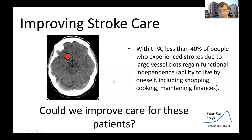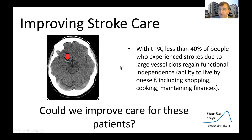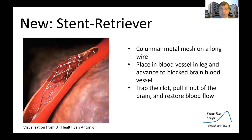TPA chemically dissolves clots. But in the next 20 years, no major advances occurred. TPA is not a perfect drug — even when you get it, less than 40% of people who have large vessel occlusions are able to live independently after the stroke. So in this study, we tested a new potential treatment: a stent retriever.